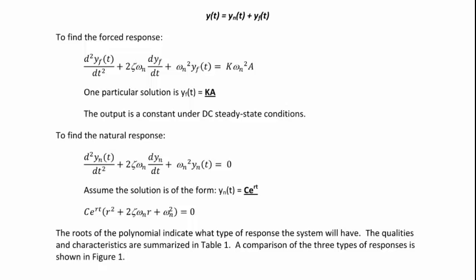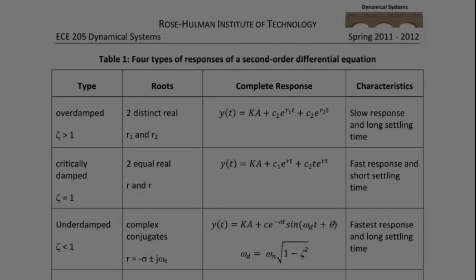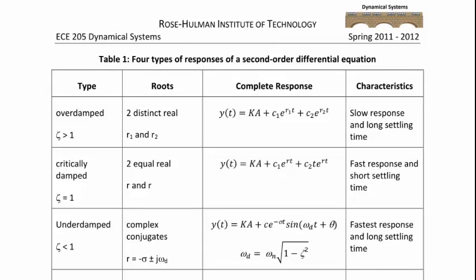This polynomial is called the characteristic polynomial. The roots of this polynomial indicate what type of response the system will have, and the qualities and characteristics are summarized in a table. When the characteristic polynomial has two distinct real roots, the type of response is overdamped, meaning zeta is greater than one. The complete response has the form y of t equals ka plus c1 e to the r1 t plus c2 e to the r2 t, and it has a slow response and a long settling time.